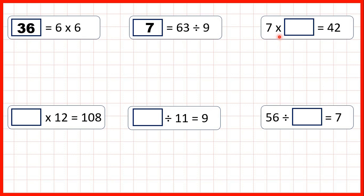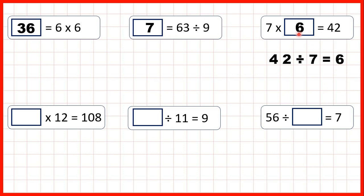Now we have 7 times something equals 42. Whenever we have a missing number in a multiplication problem we can use division to find our missing number. So we can divide 42 by 7 — that's 6 — so our missing number is 6. 7 times 6 is 42.